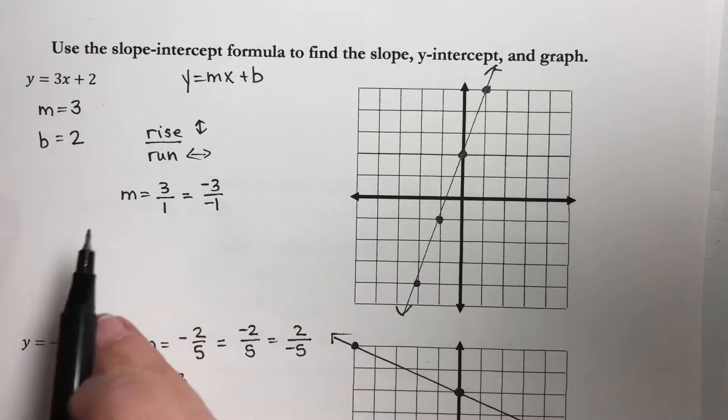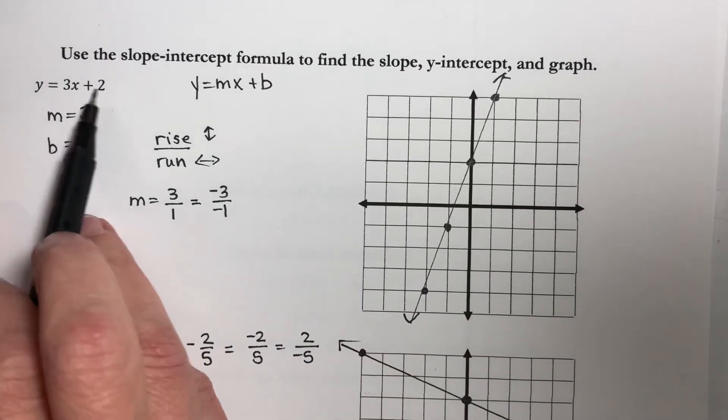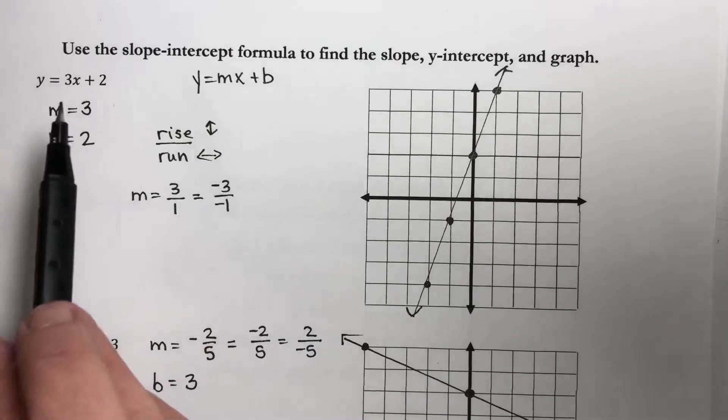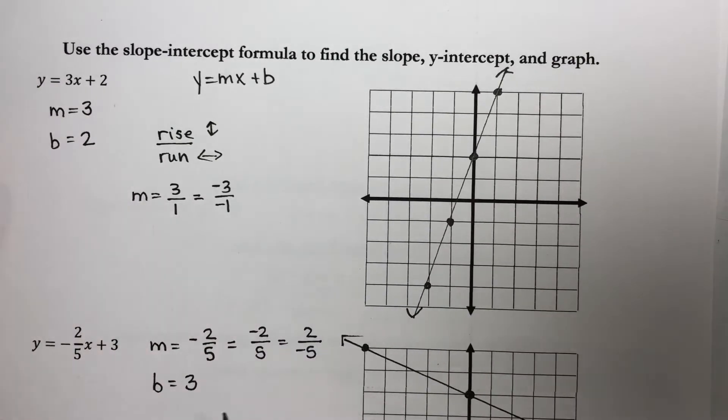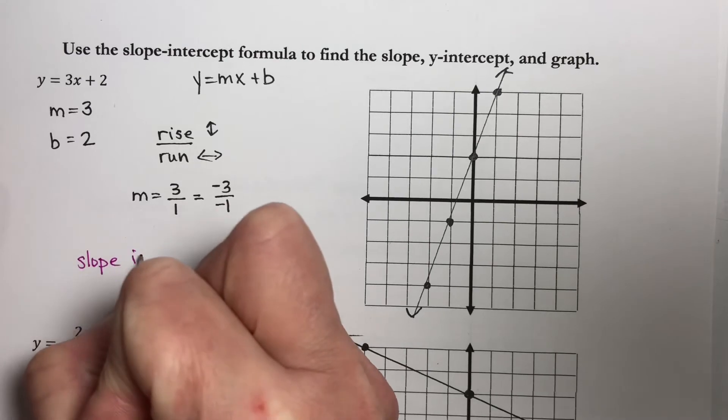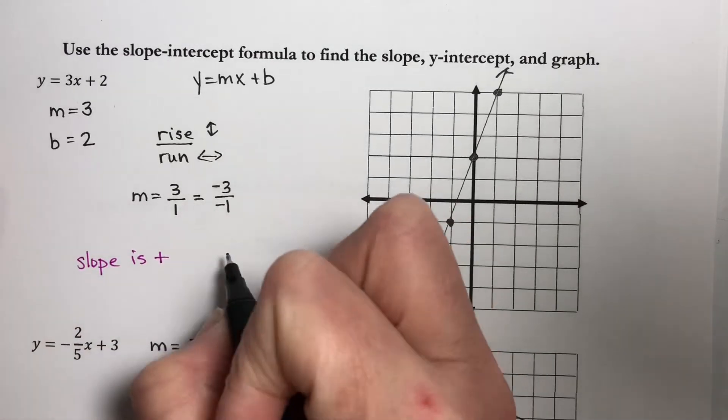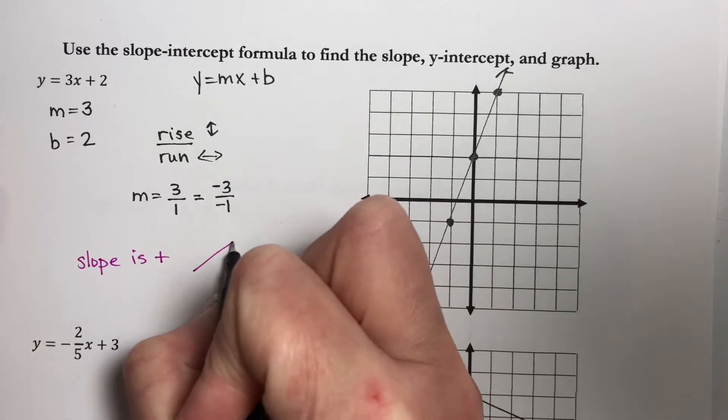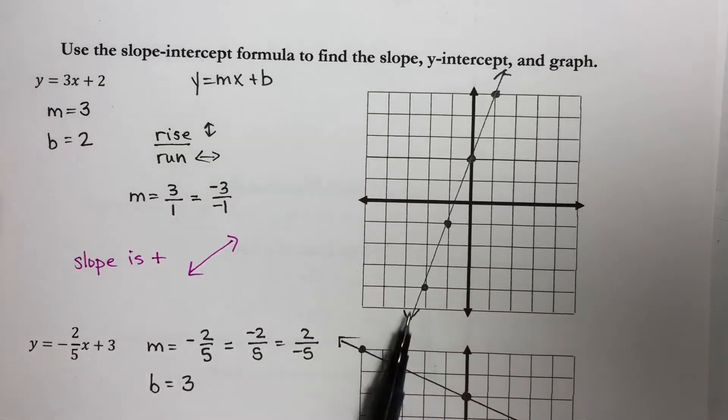But something we can tell just from looking at our slope, and you notice when we have it in this form, we can easily glance and see what our slope is. If your slope is positive,